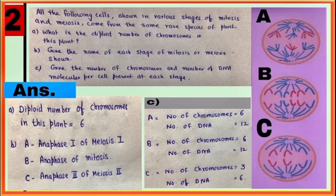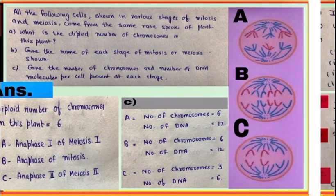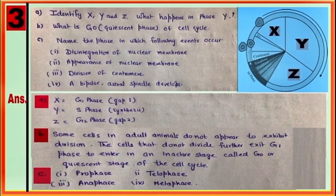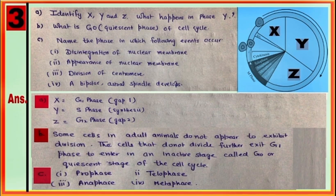Question number three is based on the diagrammatic view of cell cycle where X is G1 phase of the cell cycle, Y is S phase of the cell cycle, and Z is G2 phase of the cell cycle. Check the rest of the answers given.